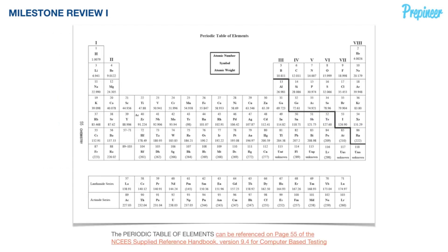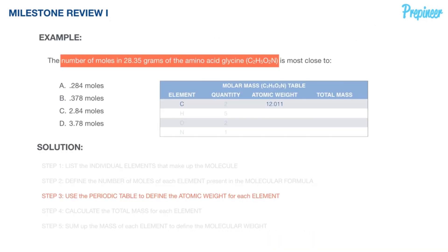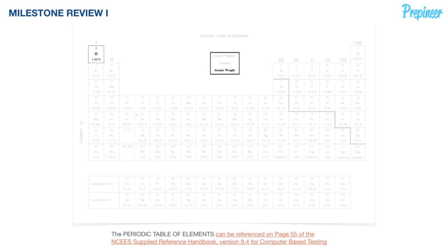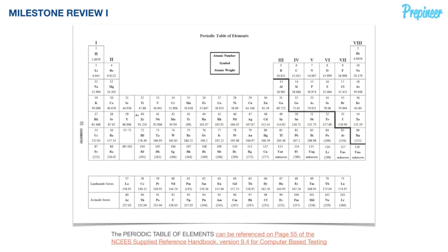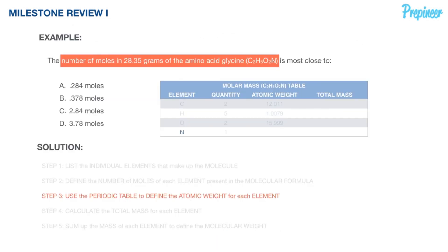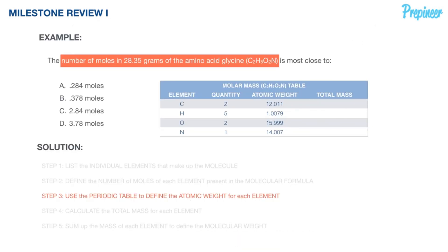Now we use the periodic table to define the atomic weight for each element, referencing page 55 of the NCEES supplied reference handbook. Carbon is element six with an atomic weight of 12.011. Hydrogen is element one with an atomic weight of 1.0079. Oxygen is element eight with an atomic weight of 15.999. Nitrogen is element seven with an atomic weight of 14.007.